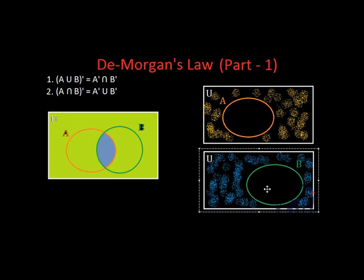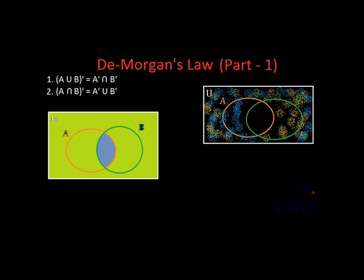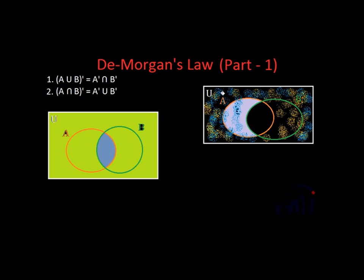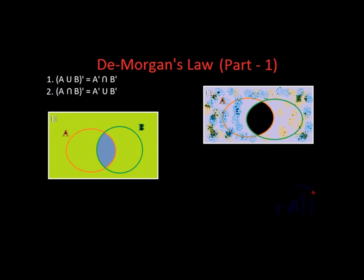To understand A complement union B complement better, let me overlap these two figures. The area where we can find either the orange spray or the blue spray will represent A complement union B complement. That means the area with only blue spray, the area with only orange spray, and the area with spray of both colors all represent A complement union B complement. So this area shaded in lilac or light blue represents A complement union B complement, and this area is nothing but the area I had shaded in light green in the first diagram.